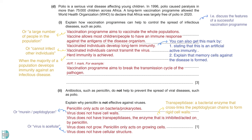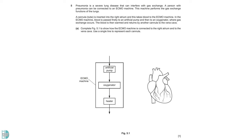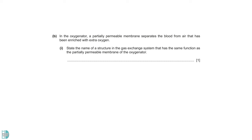Question 5 provides some information on pneumonia and a machine used for its treatment called ECMO. A wants you to complete figure 5.1 to show how the ECMO machine is connected to the right atrium and the vena cava. Here is the right atrium. Blood is transported from this part to the machine. Then, it is transported back to either the inferior or superior vena cava. State the name of a structure in the gas exchange system that has the same function as the partially permeable membrane of the oxygenator. The membrane allows gas exchange, and the alveolar wall or epithelium plays the same role.